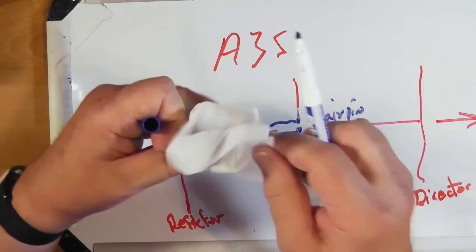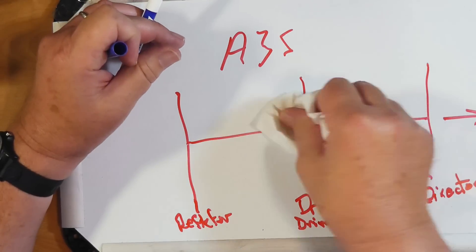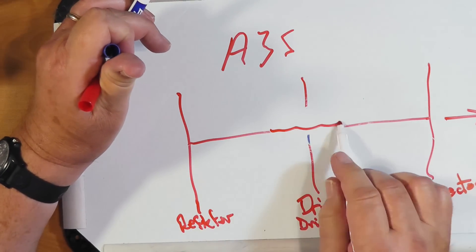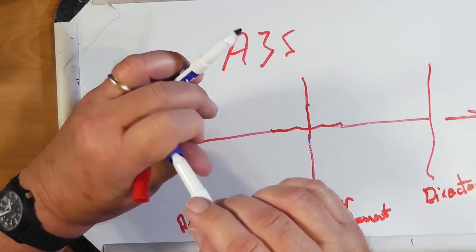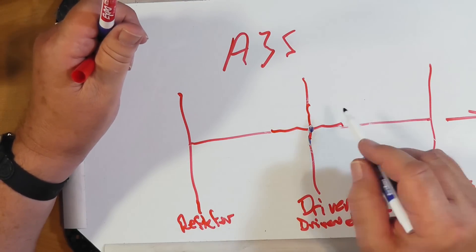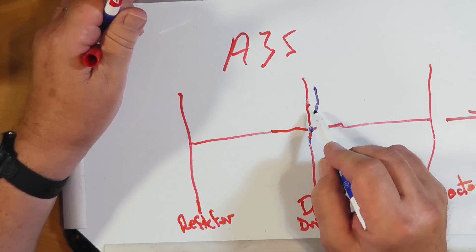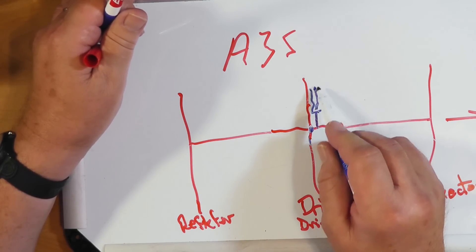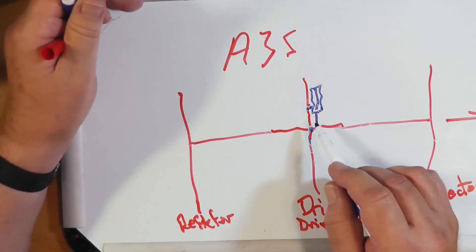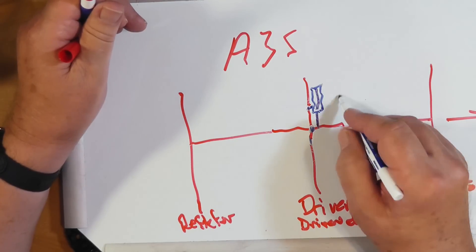There's another way of doing it, called a gamma match, where you bring up and connect the ground to here, and then you have a rod going out here with a capacitive sleeve on it, and that capacitive sleeve connects to this. This is definitely balanced to unbalanced. This is a gamma match.